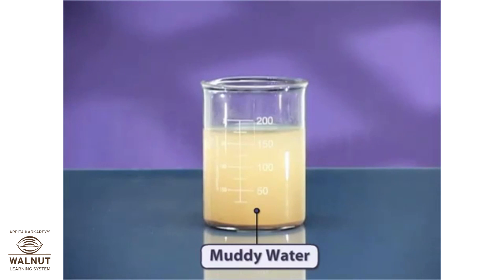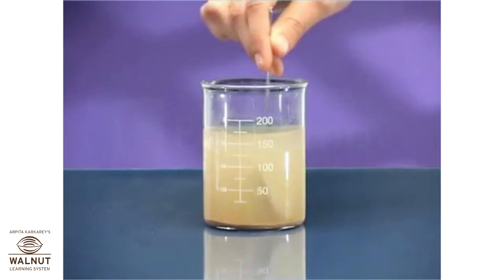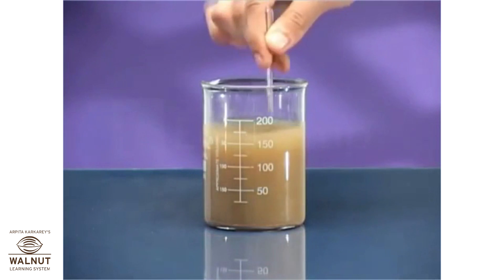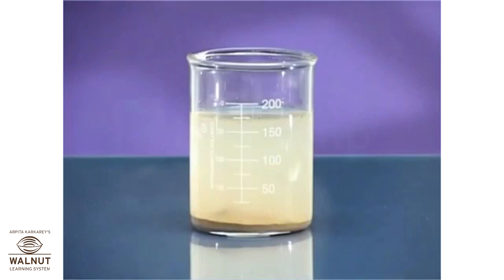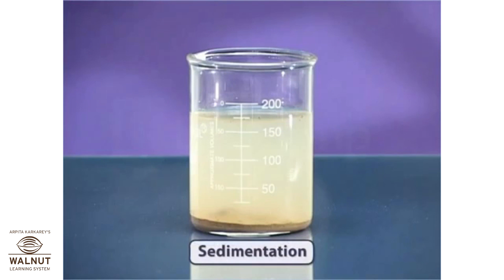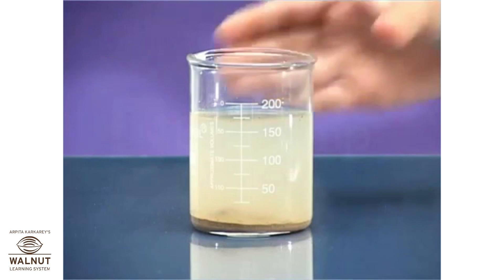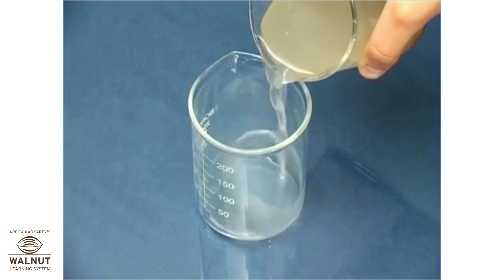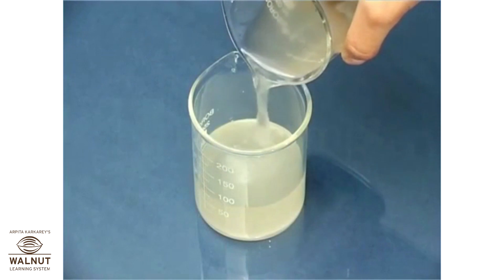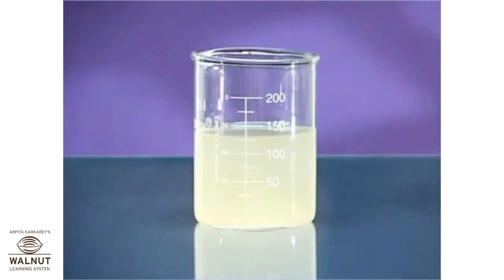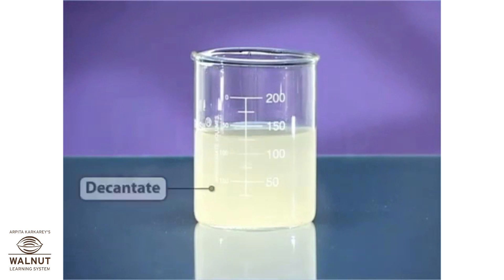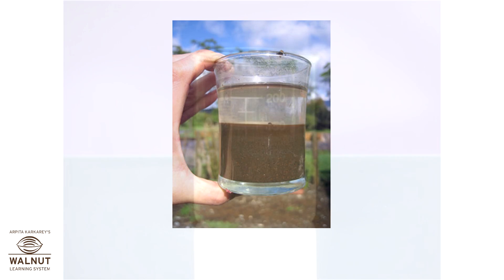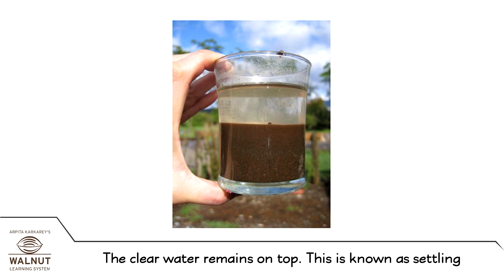Take some soy in a glass and add water to it. Mix it till the water becomes muddy. Leave it to stand for some time. The soy particles start settling down, and the clear water remains on top. This is known as settling.